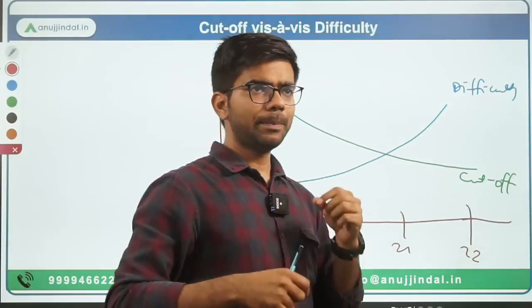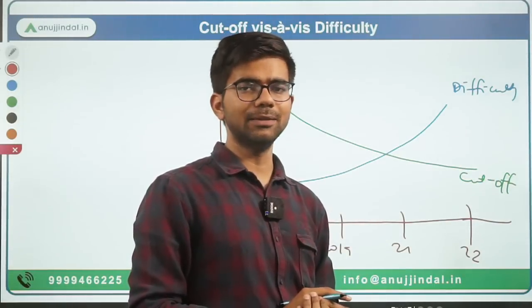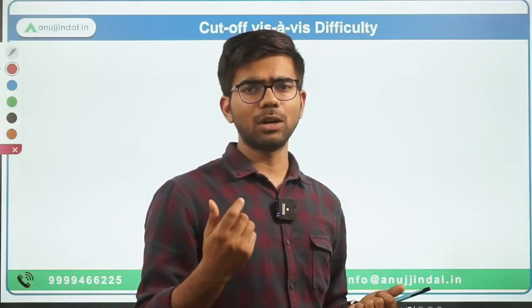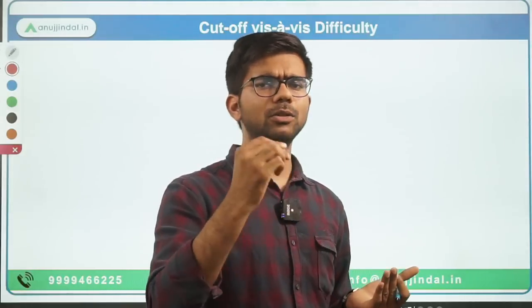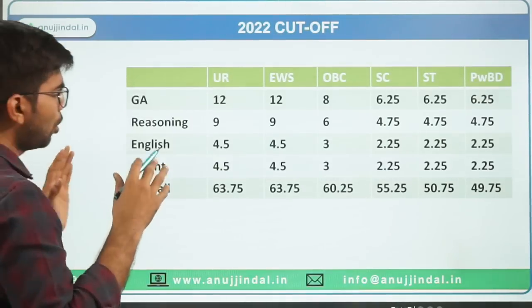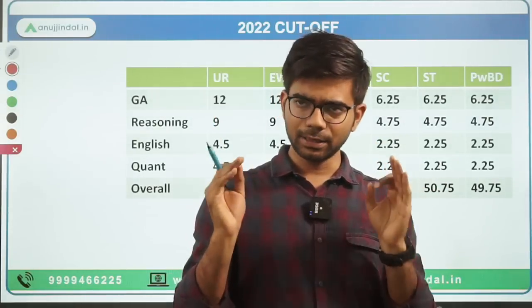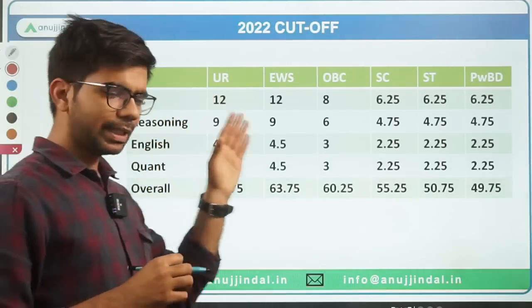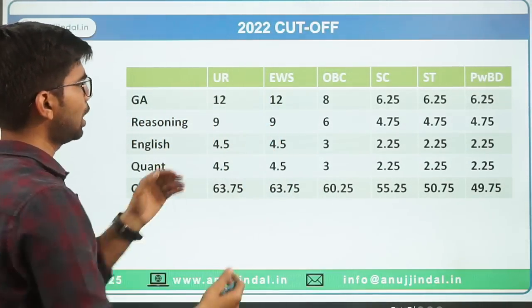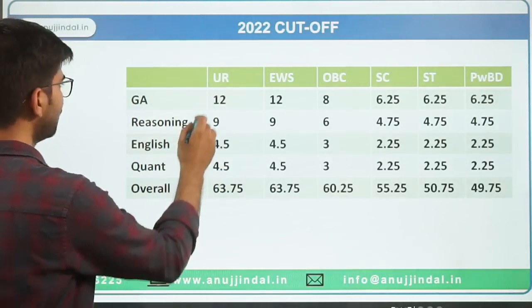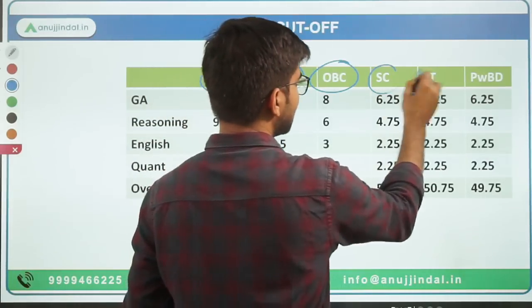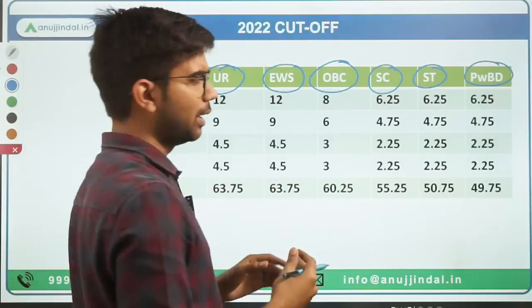We need to be prepared for all scenarios — whether paper is easy or difficult. One more thing: I discussed the unreserved category, but for other categories the cutoffs are a bit lower. Unreserved and EWS cutoffs are exactly the same — both sectional and overall — but for OBC, SC, ST, and PWBD, cutoffs are on the lower side.